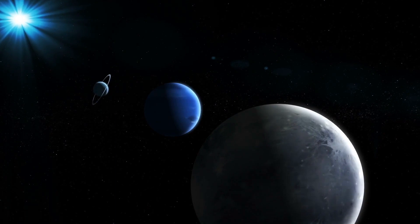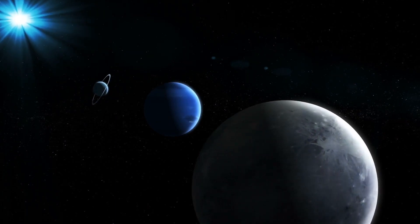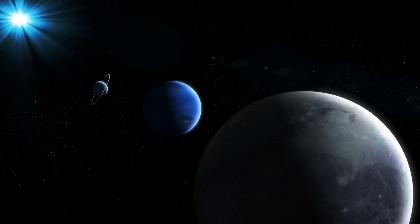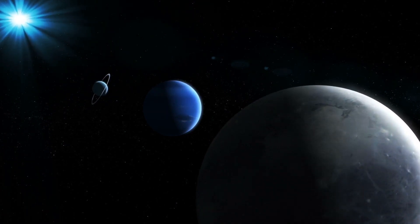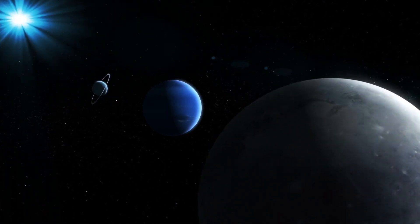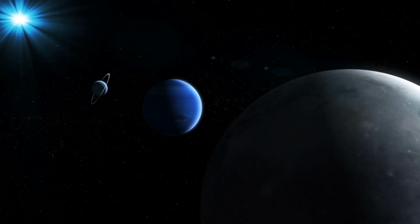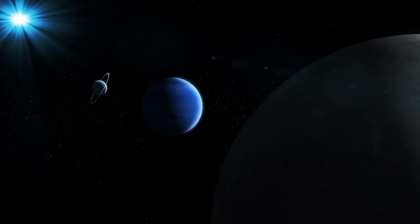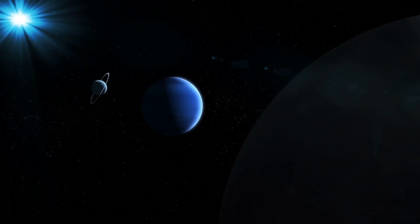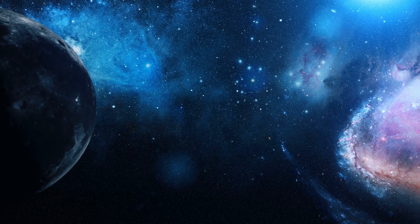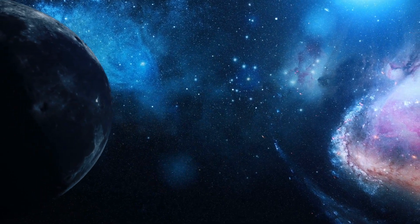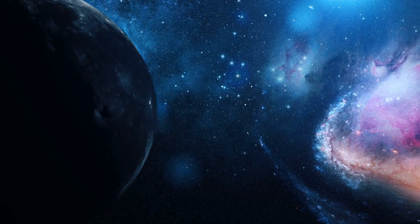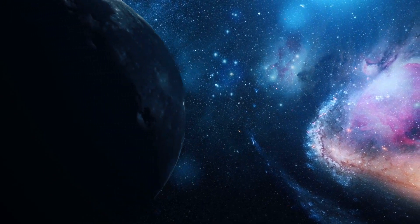This close distance could mean that Speculous 2c is tidally locked to its star. This super-Earth takes 8.5 days to make one full rotation on its axis, as well as one orbit around its star. That would leave one side of the planet in constant daylight, with the other in endless night. All this means is that life could be possible in the Terminator Zone, the thin strip of land between these two sides. We just need to get a better look to find out for sure.